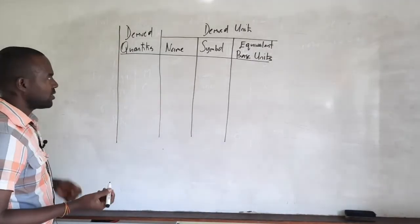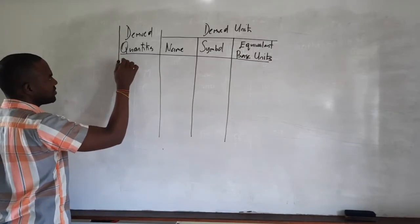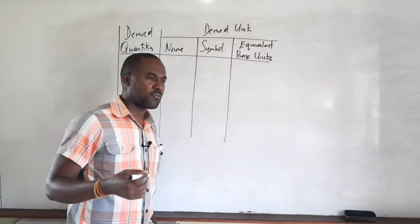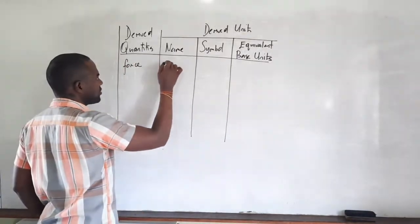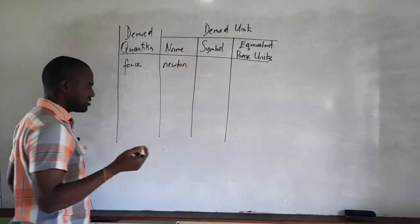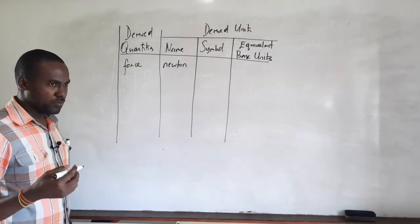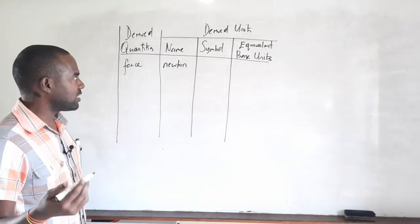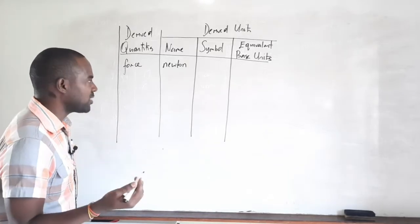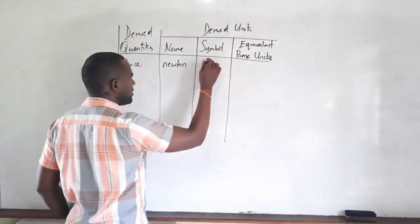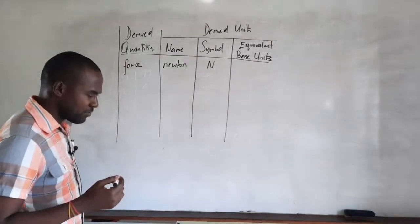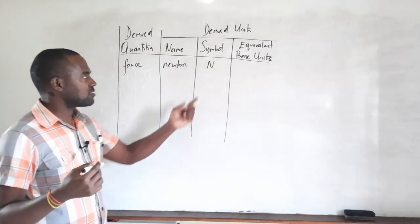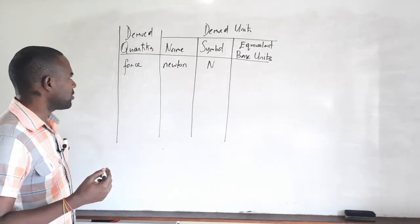The first derived quantity that comes to mind is force. The SI unit of force is the newton. Notice that newton, named after a famous person, is a proper noun, yet when written as a unit it begins with a lowercase letter — 'newton' — however its symbol is an uppercase N.